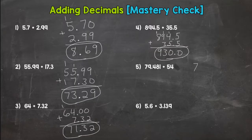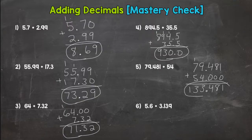Let's line up number five. Seventy-nine and four hundred eighty-one thousandths plus fifty-four. Placeholder zeros. One, eight, four, bring the decimal straight down. Thirteen. And thirteen again. So one hundred thirty-three and four hundred eighty-one thousandths.